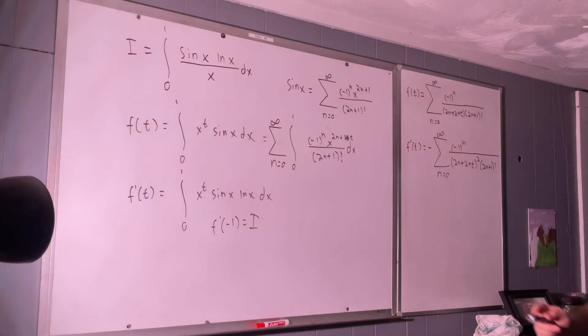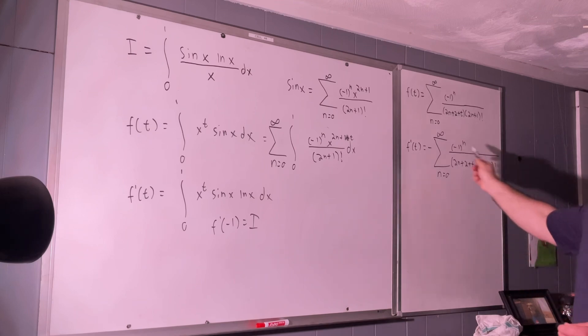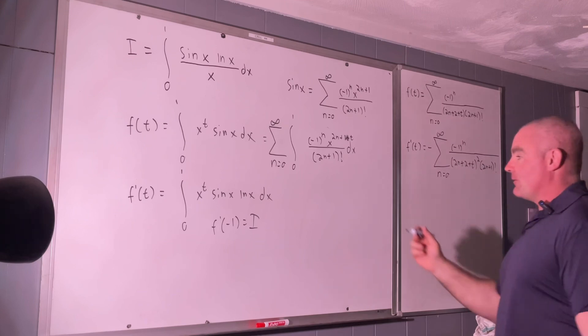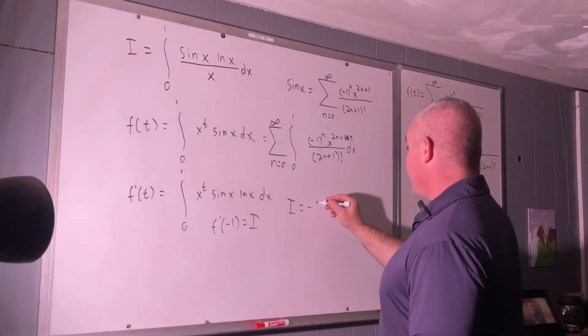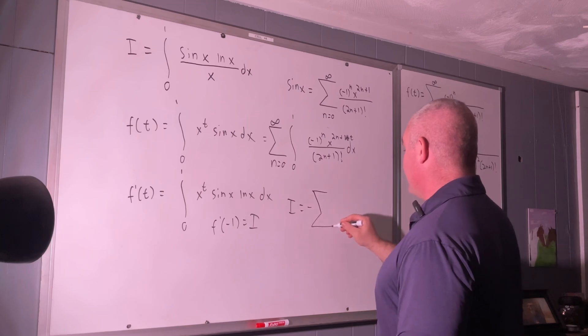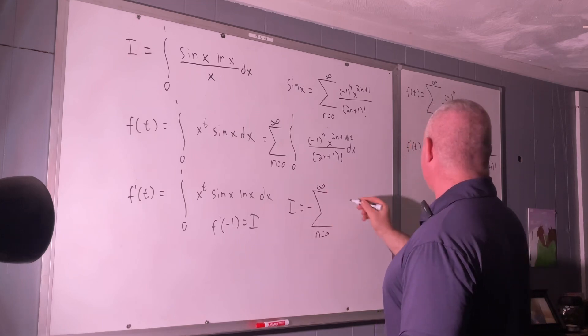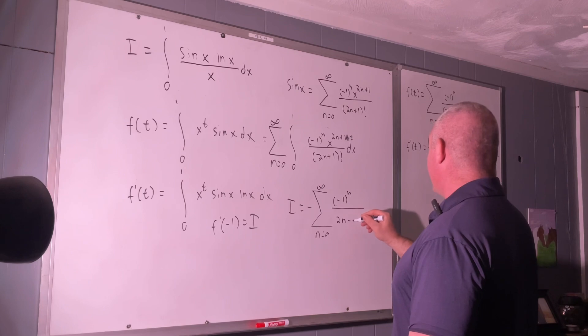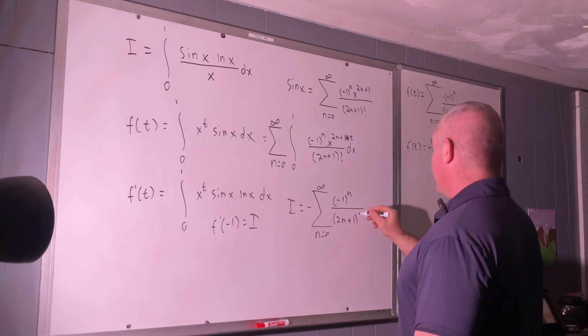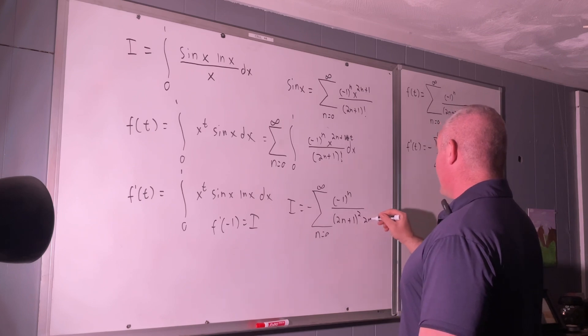Now, all we need to do is plug in negative 1 into this sum right here. And, we have the answer. So, that's going to give us i being equal to negative sum as n goes from 0 to infinity of negative 1 to the n over 2n plus 1 squared times 2n plus 1 factorial.